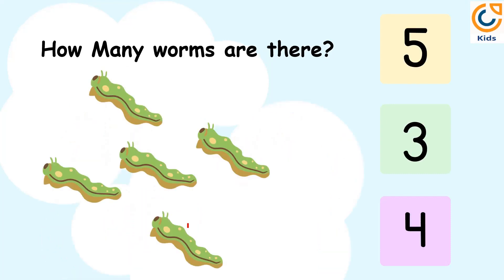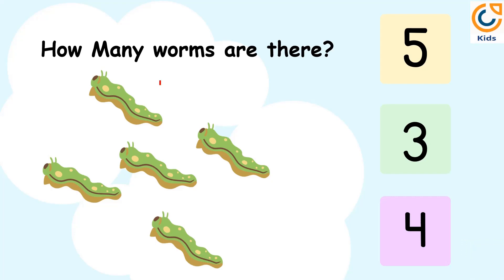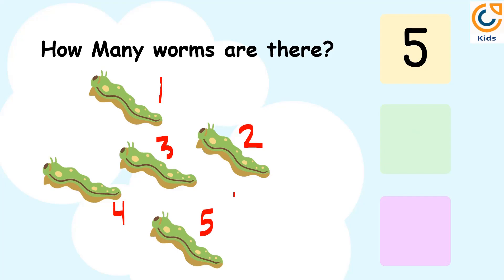How many worms are there? Let's count the number of worms. 1. 2. 3. 4. 5. There are 5 worms. So, the answer is 5.